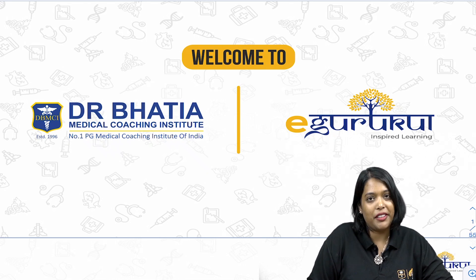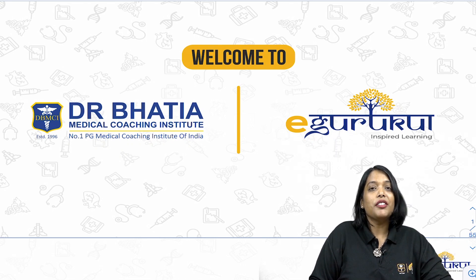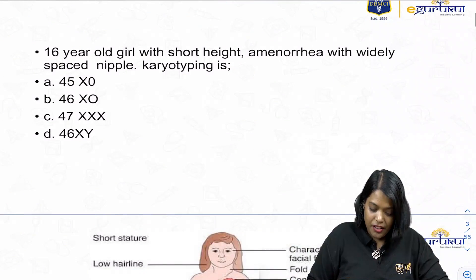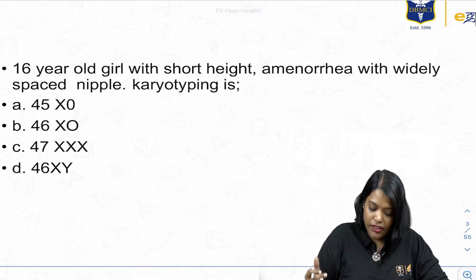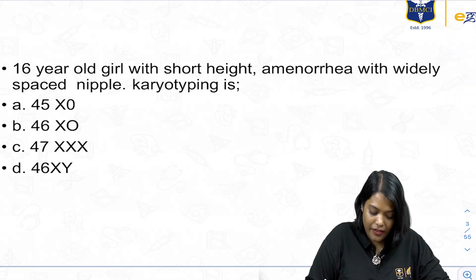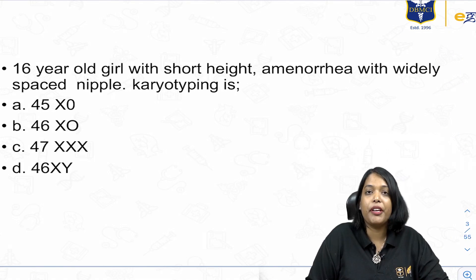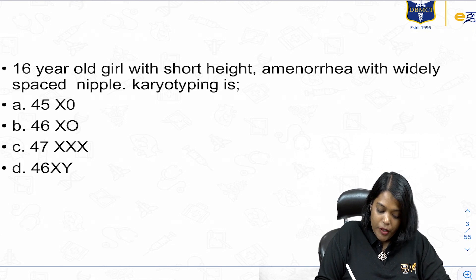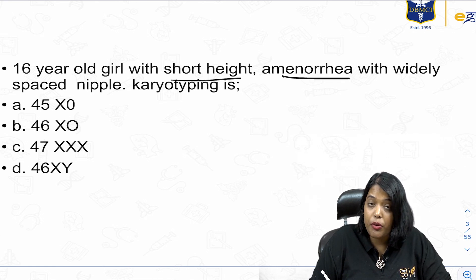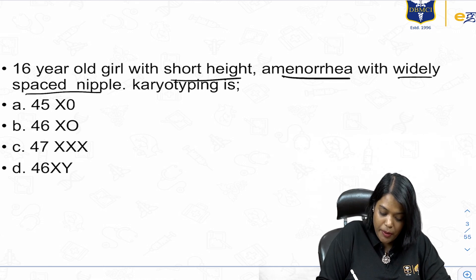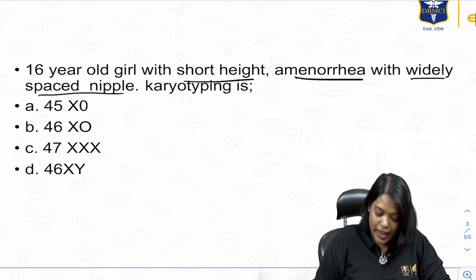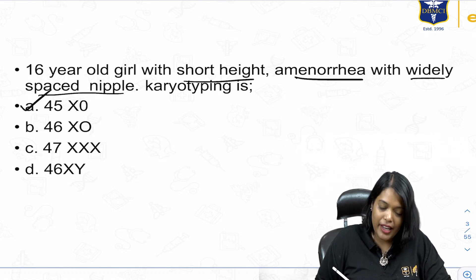So let's start with the questions. A 16-year-old girl with short height, amenorrhea, and widely spaced nipples — karyotyping is? This is a very classical description. Short height, primary amenorrhea, and widely spaced nipples is nothing but Turner syndrome. The karyotype for Turner syndrome is 45XO.